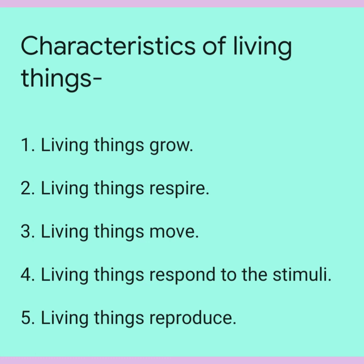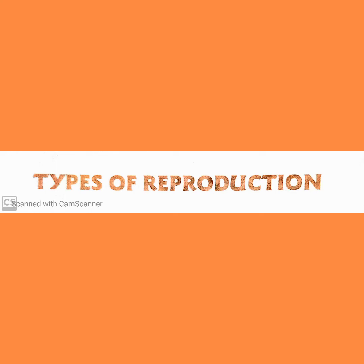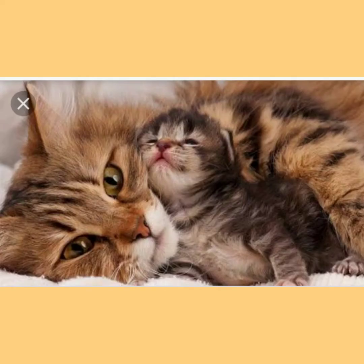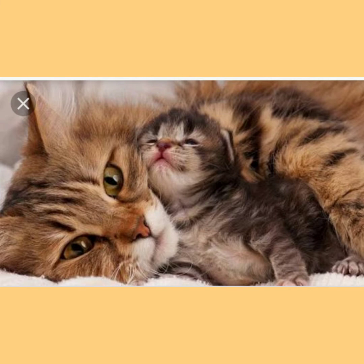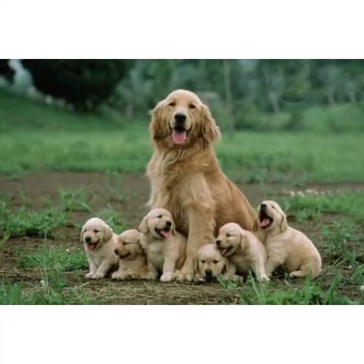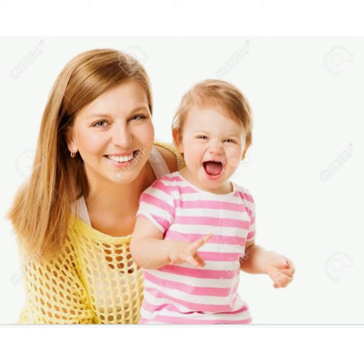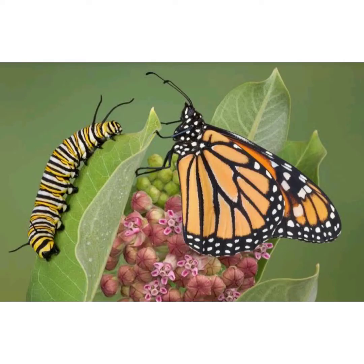Living things reproduce, so today we will learn about how living things reproduce. Types of reproduction: animals reproduce in two ways — one, by laying eggs, and two, by giving birth to babies. Some animal babies look similar to their parents when they are born, for example, cats, dogs, cows and human beings. Some animal babies look very different from their parents when born and start resembling their parents as they grow, for example, butterflies and frogs.